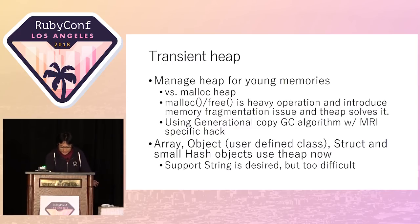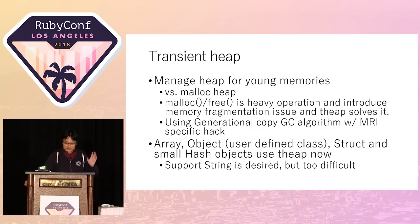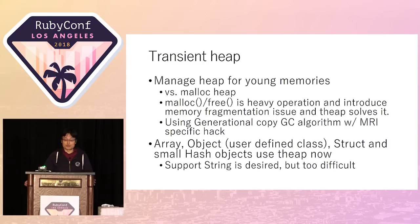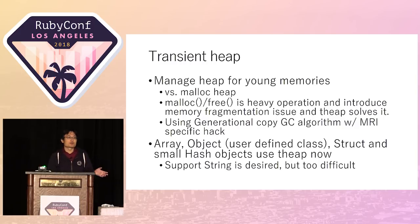Transient heap uses copying and generational garbage collection techniques. Generally speaking, MRI can't use a memory-moving technique because we use conservative garbage collection, but I introduce this moving technique with some limitation and MRI-specific hacking, to keep compatibility with the current existing code.